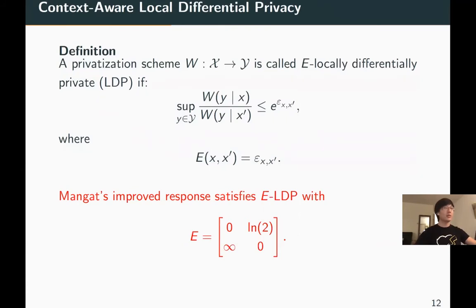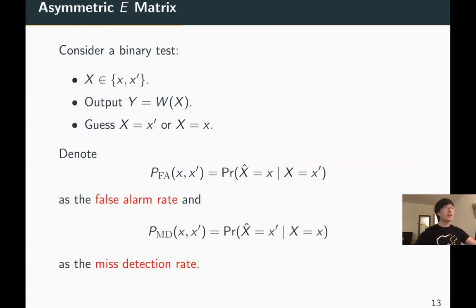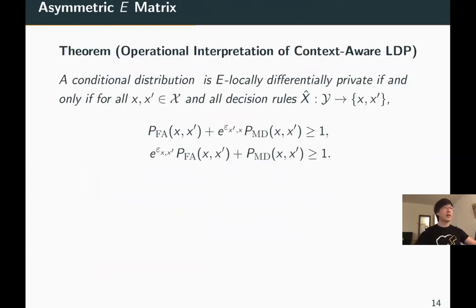Now the question is, how should we interpret these parameters? When E is asymmetric, more specifically epsilon_{x,x'} is not equal to epsilon_{x',x}, let's consider a binary test where the input is known to be in the set {x, x'}. Given the output satisfying ELDP, the goal is to guess whether the input is x or x'. We measure performance by two failure probabilities: the false alarm rate P_FA(x,x') is the probability of outputting x given the true input is x', and the miss detection rate P_MD(x,x') is the probability of outputting x' when the true input is x. The following theorem gives an operational interpretation of context-aware LDP, which says that the two failure rates are constrained by two boundaries and cannot be simultaneously small.